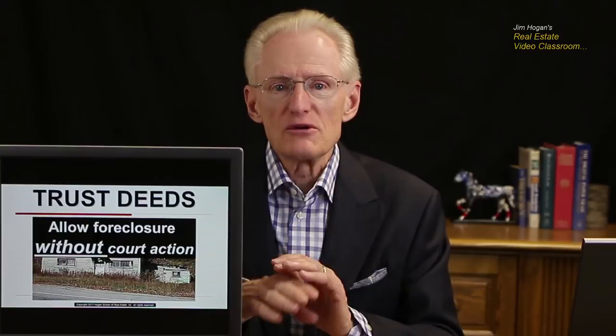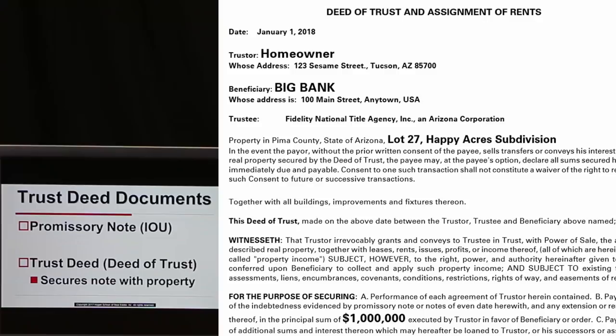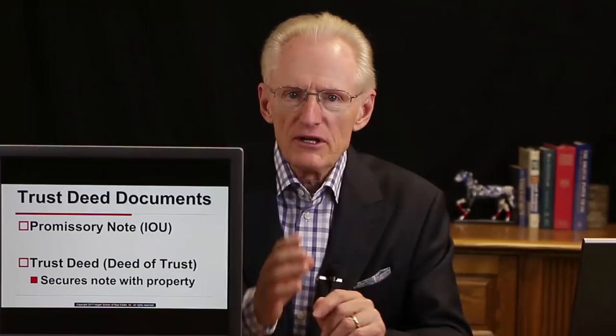Why do we even cover mortgages? Because the mortgage is the basis for understanding judicial foreclosure. Now, a deed of trust also has two documents: a promissory note and a trust deed or deed of trust. If you own a home and borrowed money to buy it, when you look at your important papers, you will not see a mortgage — you'll see 'deed of trust' at the top.